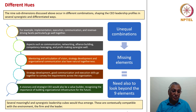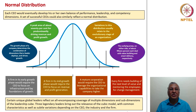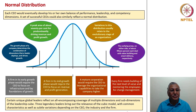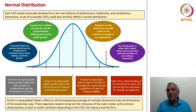Within the performance leadership model, several meaningful and synergistic leadership cubes emerge, contextually compatible with the environment, the firm and the leader. Each CEO would eventually develop his or her own balance of performance, leadership and competency dimensions. A set of successful CEOs could also reflect a normal distribution. The growth phase of a company determines the combination of dimensions a leader deploys. A peak area of about 70% of the normal distribution of CEOs would be predominantly driving revenue and profit growth, while the outlying areas on either side of about 15% each deal with value building and smart delivery respectively.